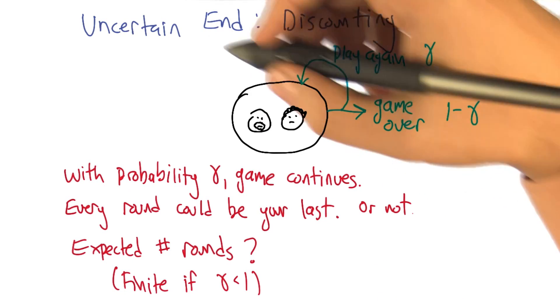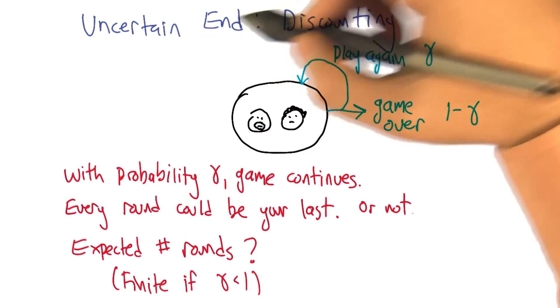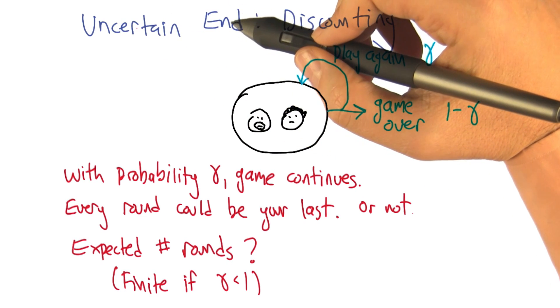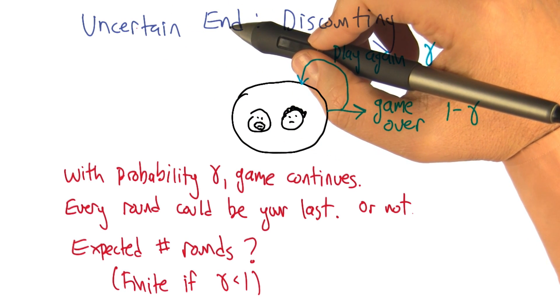So here's how I started to think about it. Let's say, how can we represent the idea that we have an uncertain ending? Well, one way would be if we had some kind of generic probability distribution over the number of rounds that the game's going to be played.